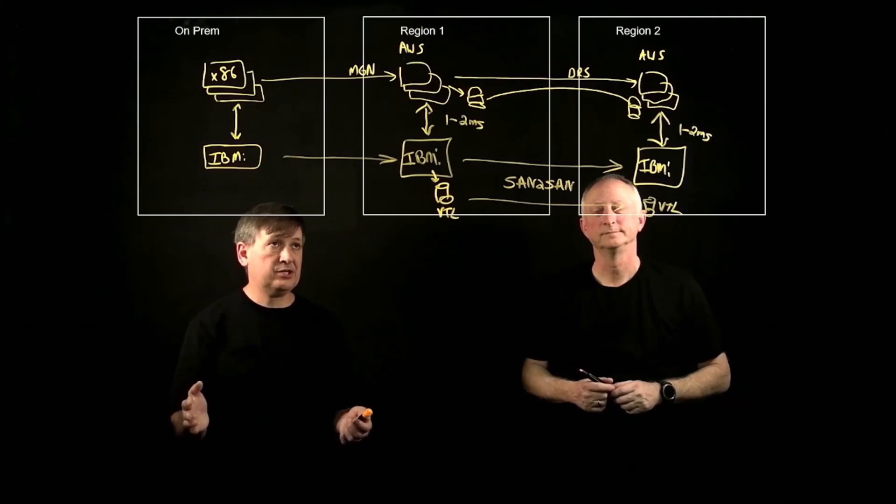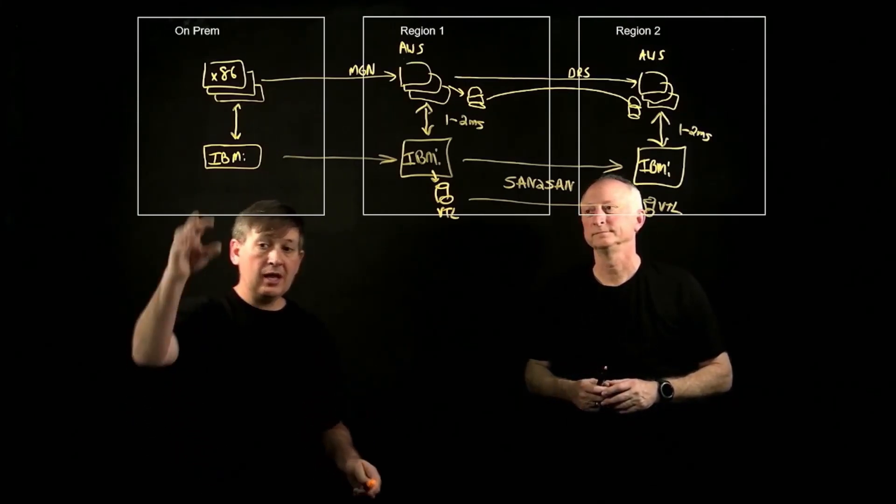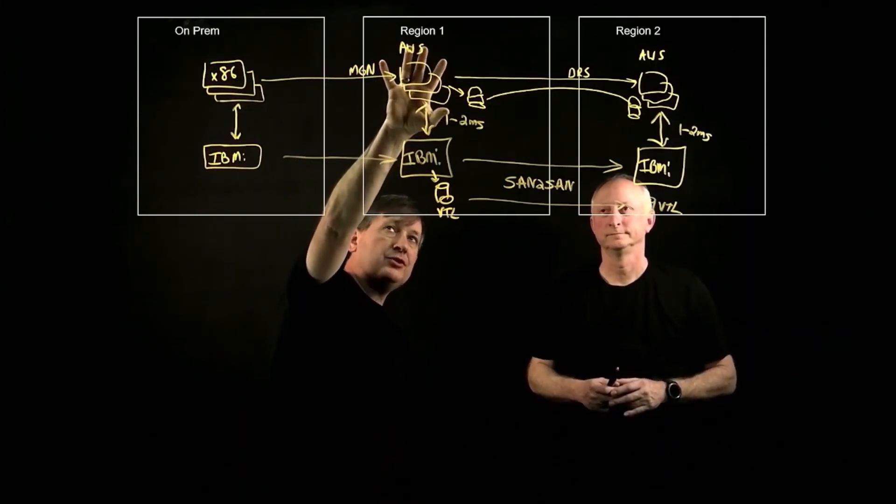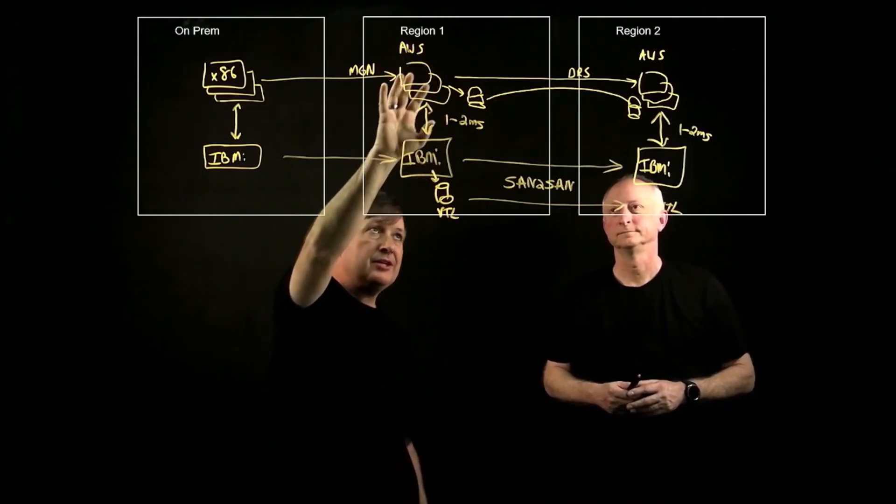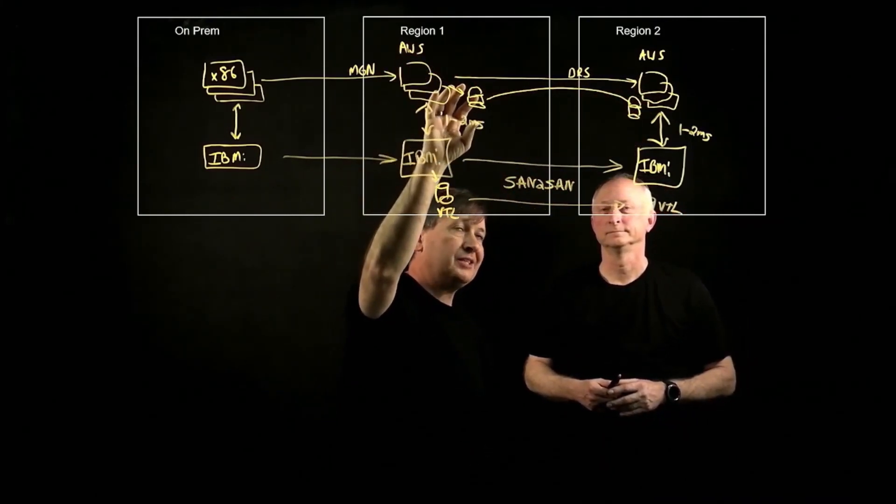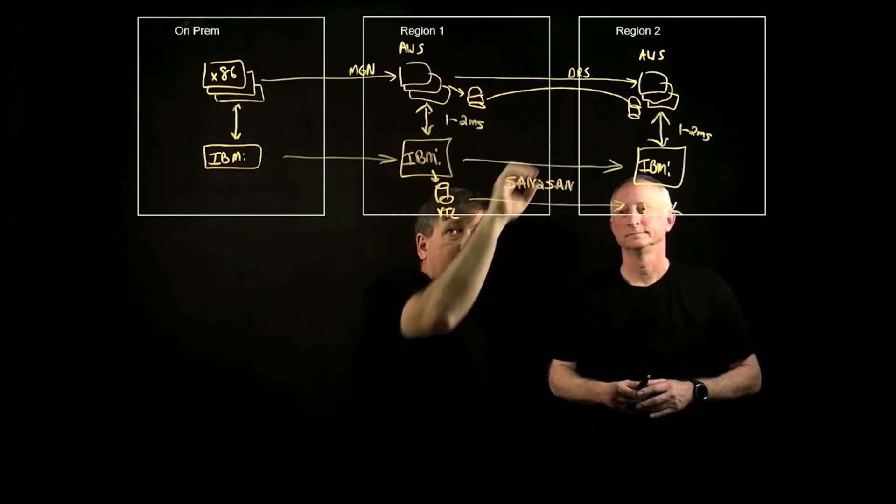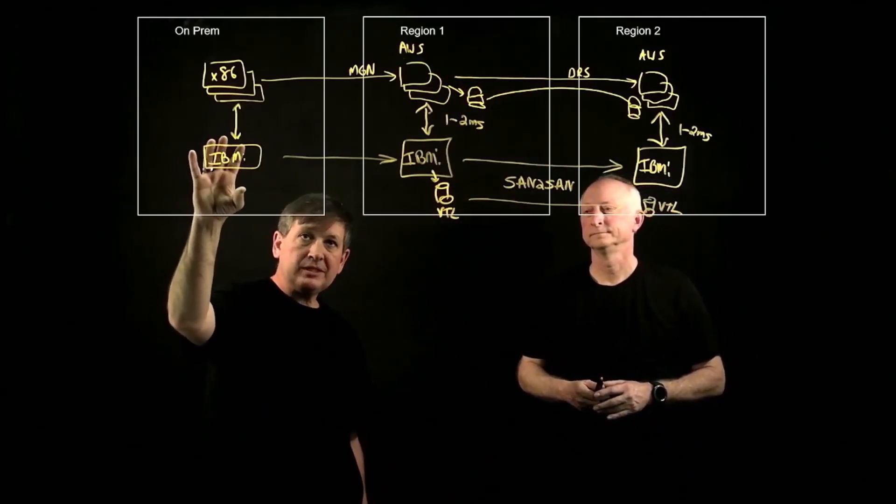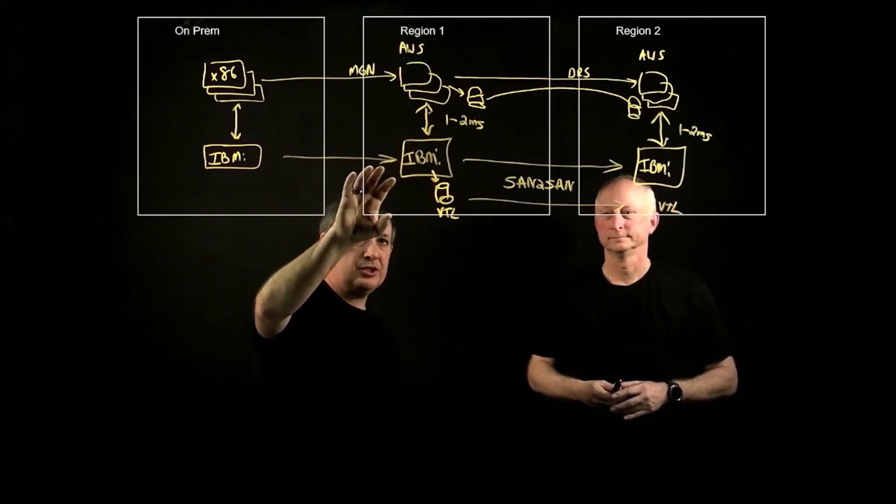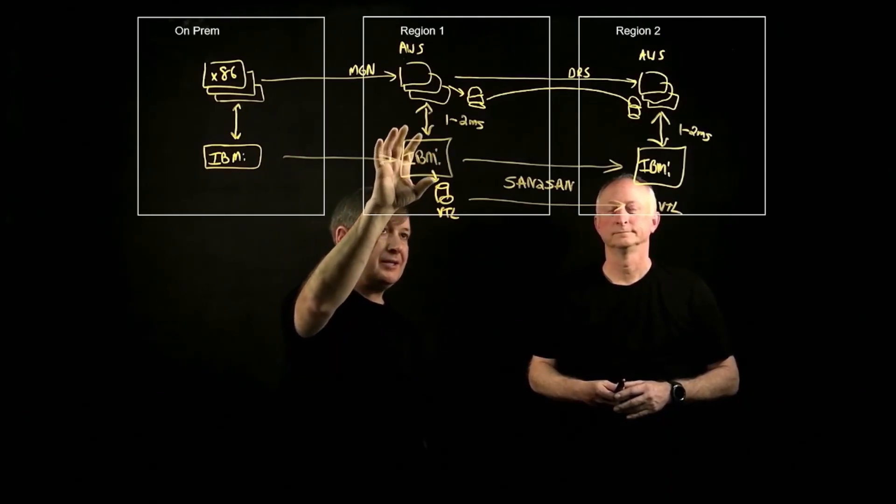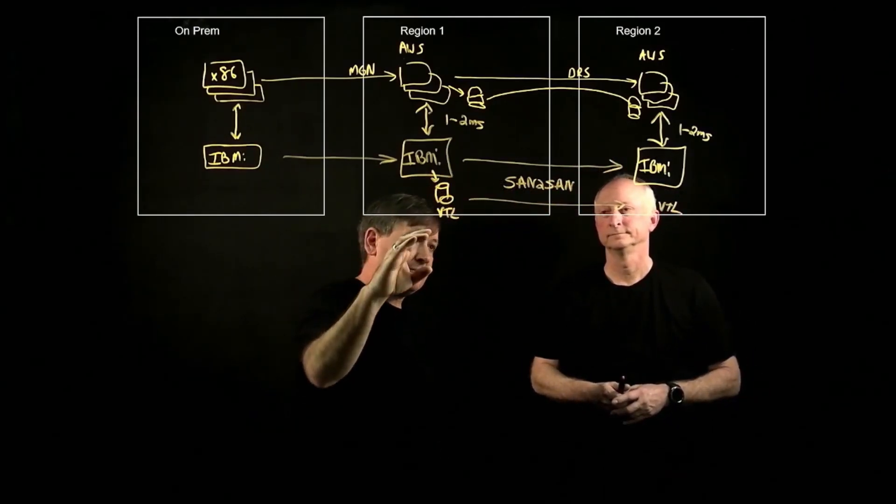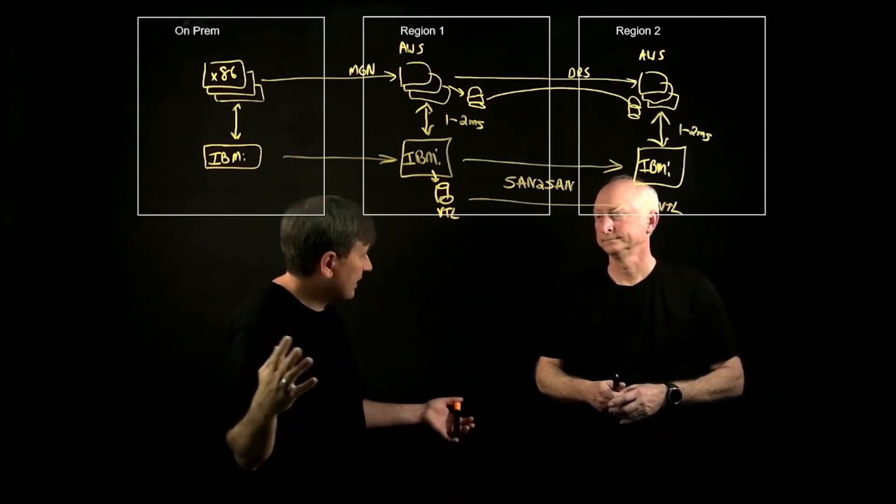In this architecture, it looks like I have all the pieces covered. I can go from my x86 on-prem and use MGN to replicate it into AWS for migration. I can then use DRS to replicate my x86 to a second region for DR. I can use my AWS backups to do all of my backups for my x86 workload. And then on the IBM tier, the IBM is migrated into the Connectria hybrid cloud solution using some native IBM tools. It has SAN to SAN replication to the second Connectria location. And then we have backups covered with the VTL solution. I think we got everything covered.